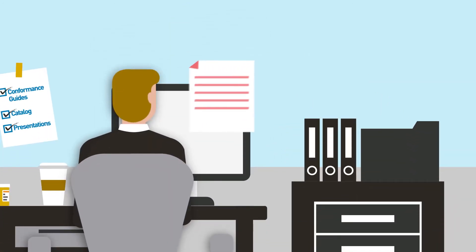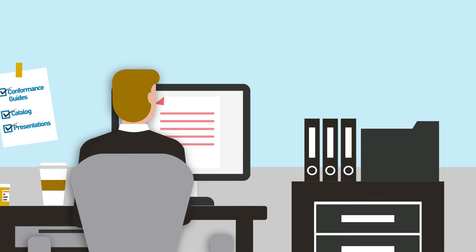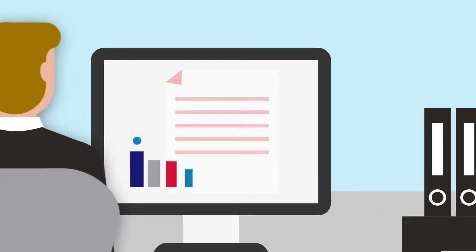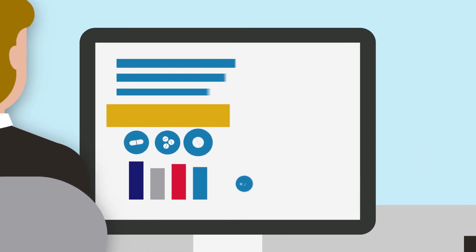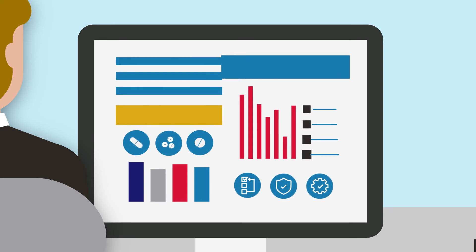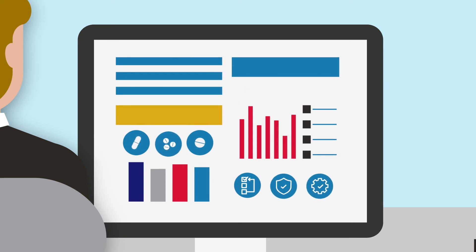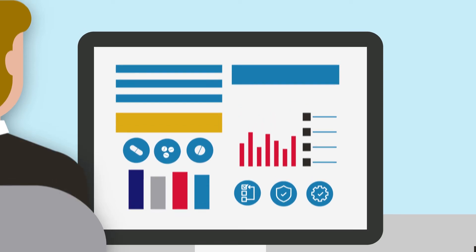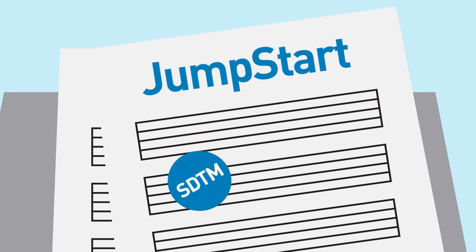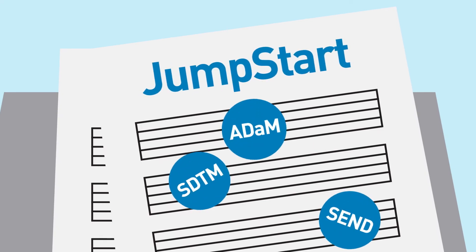Data standards are helping FDA streamline and modernize the drug review process. With data standards, reviewers don't have to spend as much time organizing data, so they can concentrate on using the data to review the safety and efficacy of drugs. One example is a program called Jumpstart. When we receive data in standard formats, Jumpstart helps the reviewer get a jumpstart on the review.